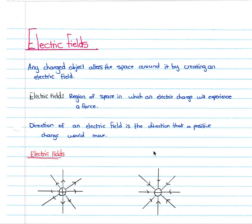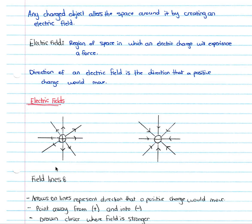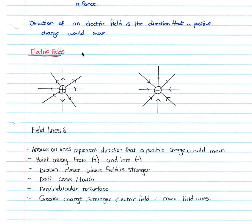Then we look at electric fields. An electric field is a region of space in which an electric charge will experience a force. Any charged object alters the space around it by creating an electric field. The direction of an electric field is the direction that a positive charge would move in. When looking at electric field lines, you will often be asked to draw the electric field and use field lines to explain it.